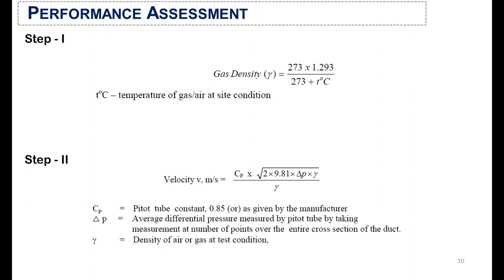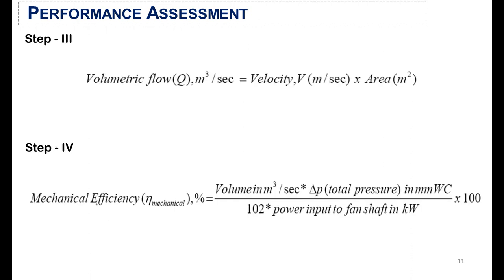In the first step of performance assessment, you need to calculate the gas density. Here is the formula to calculate the gas density, where T is the temperature of the gas at site conditions. Once you have calculated the gas density, you use this value for the calculation of velocity in step two. In step three, calculate the volumetric flow rate of the gas. Finally, in step four, calculate the efficiency of the fan or blower using the pre-calculated values.